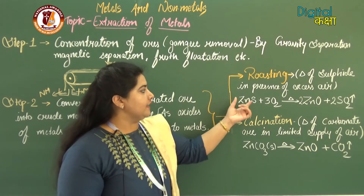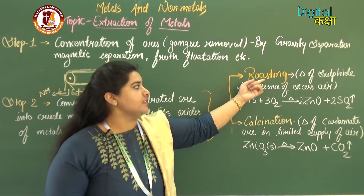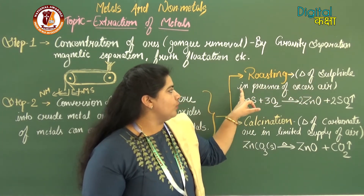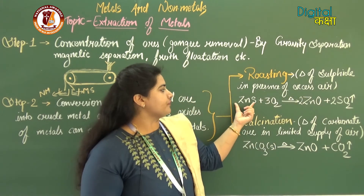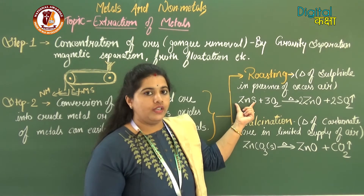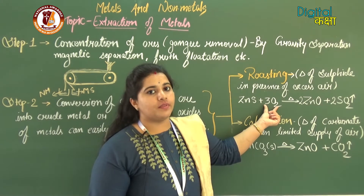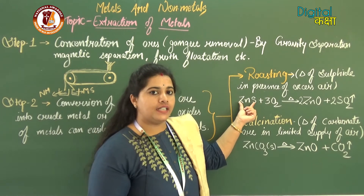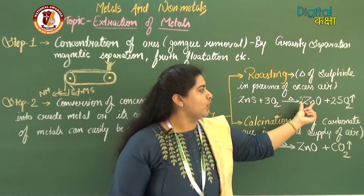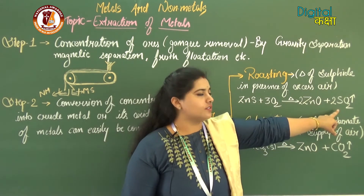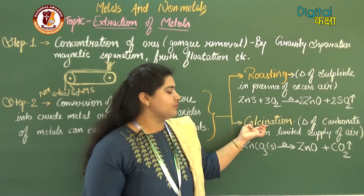If the ore present is sulfide, then roasting is done. Roasting is the heating of sulfide ore in the presence of excess air. For example, zinc sulfide ore is heated with excess O2: ZnS + O2 → ZnO + SO2. The zinc sulfide converts to zinc oxide and sulfur dioxide gas is released.